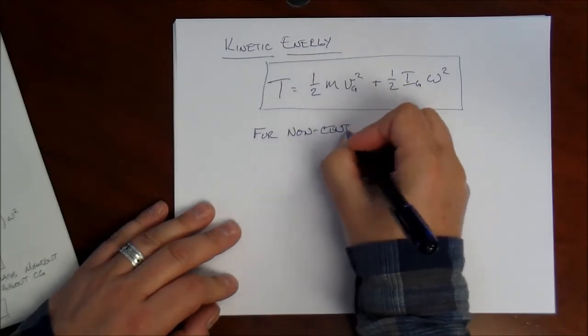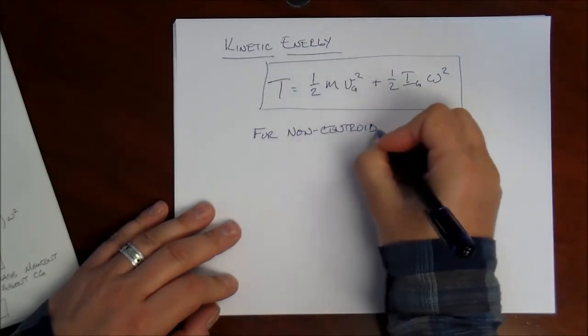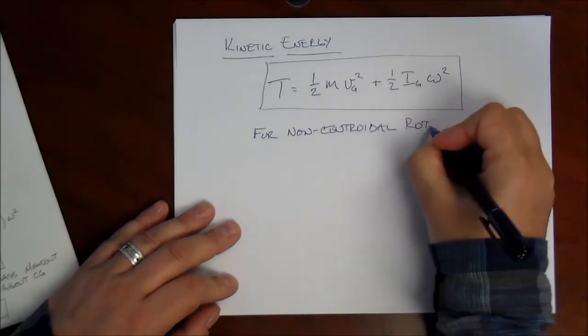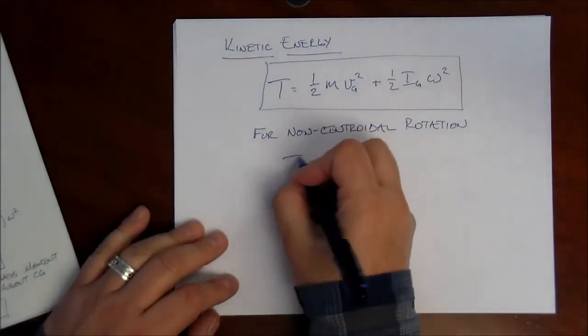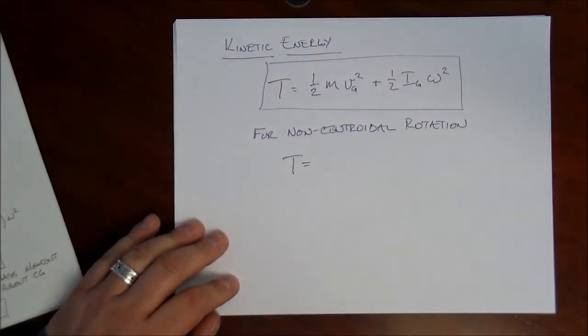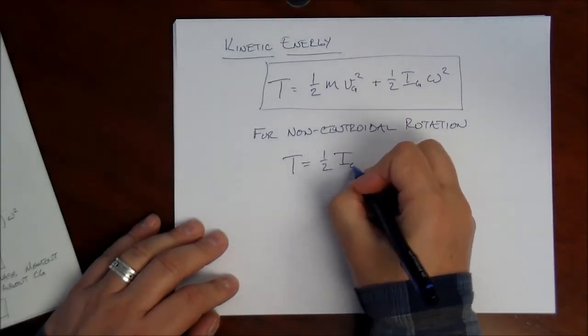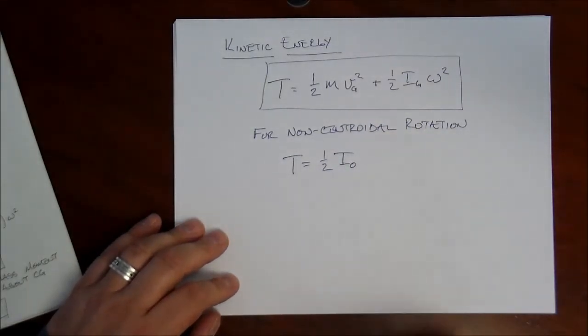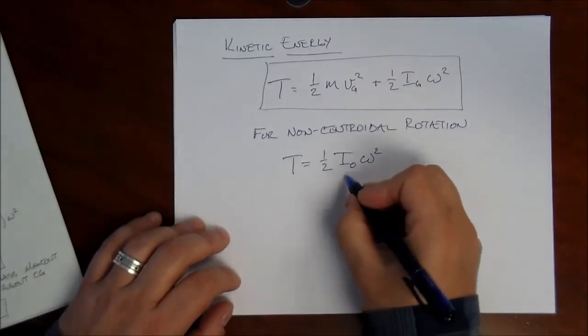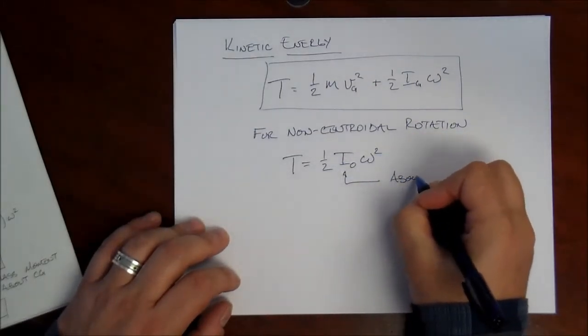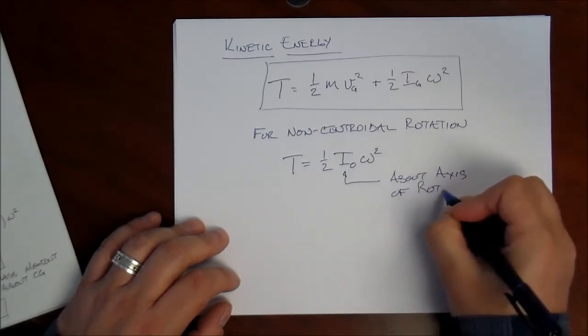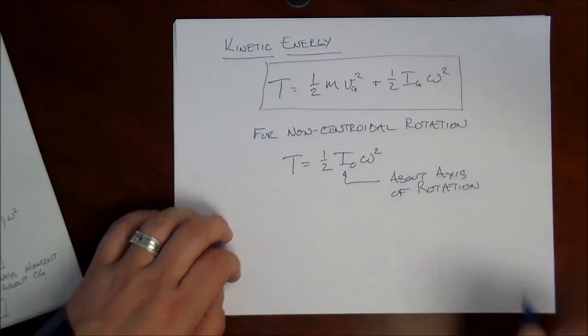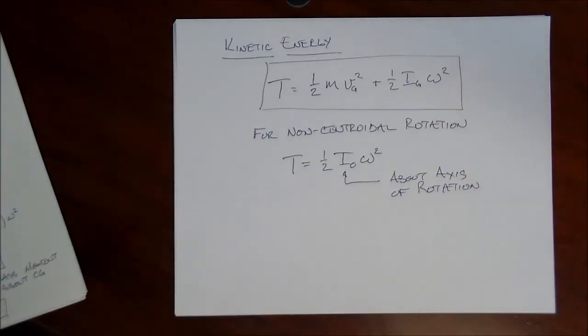If your rigid body happens to be rotating about a point that is not its mass center, then you can write the kinetic energy as one-half i about the axis of rotation o omega squared. So that is about the axis of rotation. And you can find that using the tables for mass moment of inertia about a mass center and the parallel axis theorem.